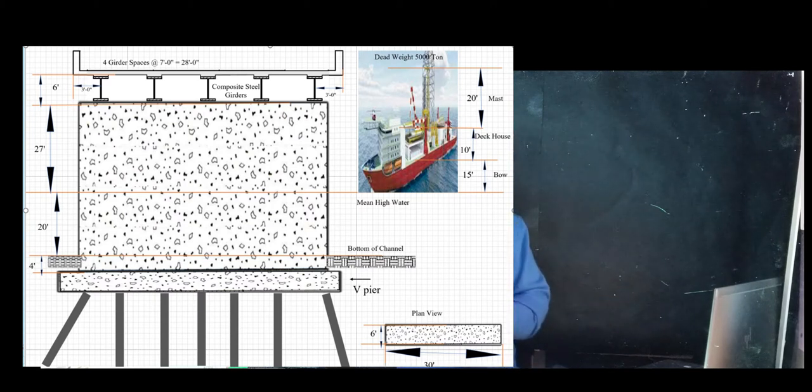When we look at the ship itself, the bow is about 15 feet, the deck house is about 10 feet, and the mast is about 20 feet. If you look at the side view of the pier, the pier is only six feet wide.